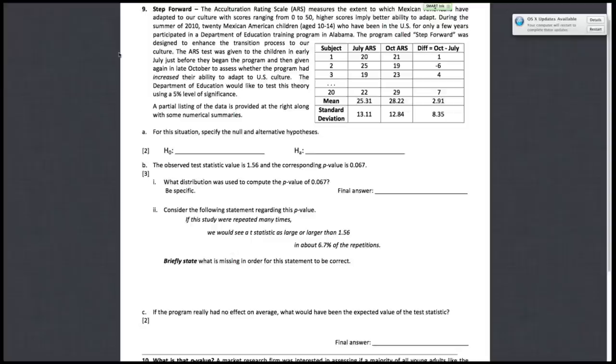Alright, so for this test, basically subjects 1 through 20 were put into a training program called Step Forward, and we want to see whether or not this Step Forward program helps children to adapt to U.S. culture, so increases their ability to adapt to U.S. culture.